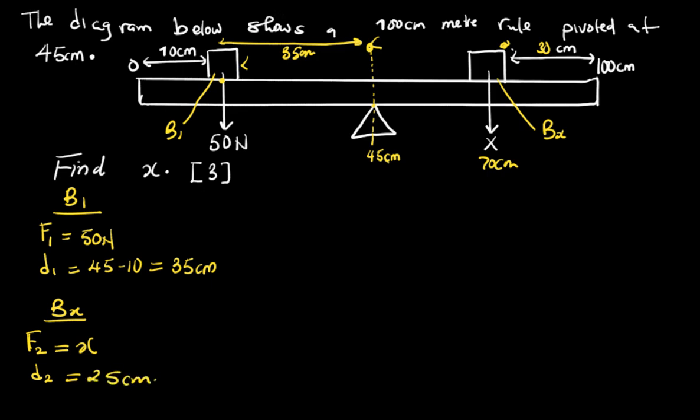I hope what we did this side - from 0 to 10, so 45 minus 10 - it's the same thing. But this side, because of 100, we first subtract 30 from 100 to get 70, then 70 minus 45 gives us 25. Then we use the principle of moments: F1 multiplied by D1 is equal to F2 multiplied by D2. This should be able to balance up because this is in equilibrium.